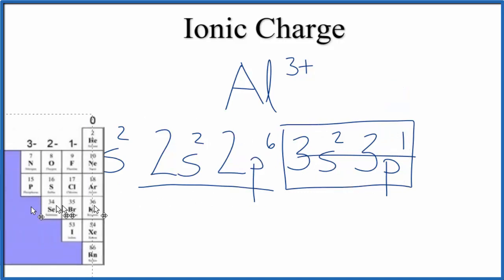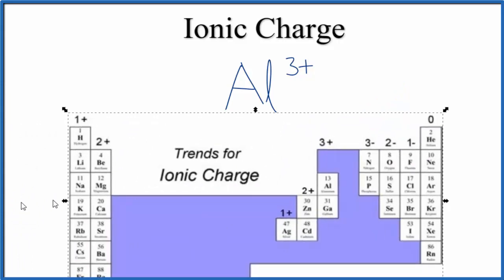So, either way, you can use the periodic table, look at the trends for ionic charge, or you can look at the electron configuration to find the ionic charge for aluminum.